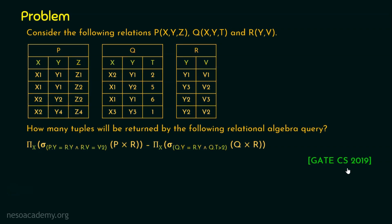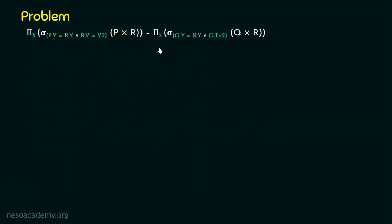Let's highlight the key things here. We need to deal with the values, do the Cartesian product, apply selection, and finally apply the projection. Let me move this query to a new slide. At first, we will take the relations P and R and apply the Cartesian product to get the result.